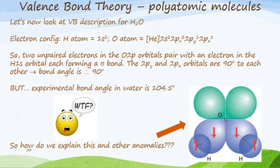Now let's go to polyatomics—where we have more than two atoms. For water, we have two hydrogen atoms and one oxygen atom. The electron configuration for hydrogen is 1s¹, and for oxygen we have [He] 2s² 2p_x² 2p_y¹ 2p_z¹.